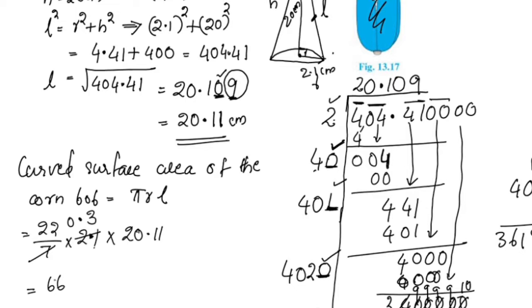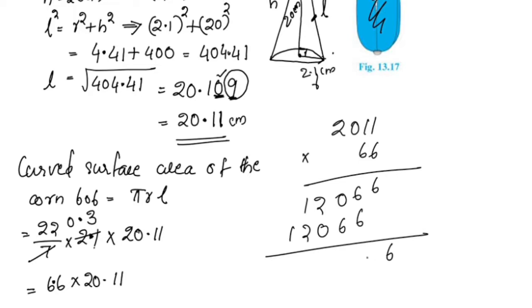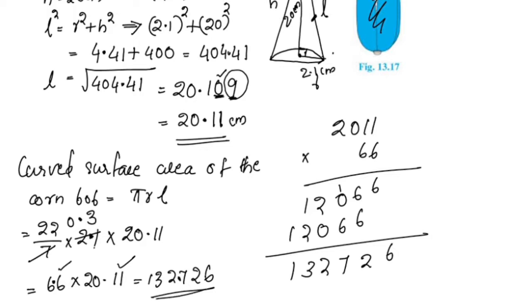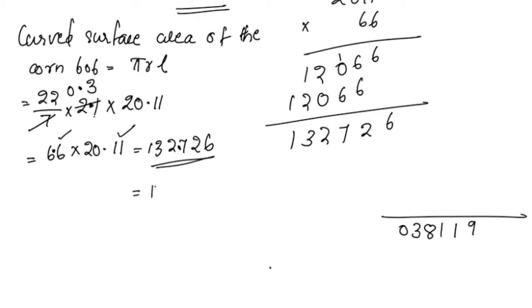Now we compute 6.6 × 20.11: 2011 × 66 = 132726. Placing the decimal point gives us 132.726 cm². So the curved surface area is 132.726 cm².